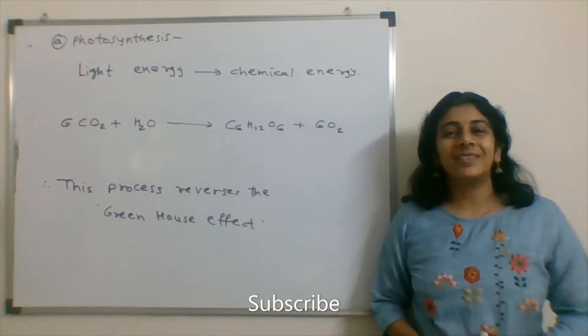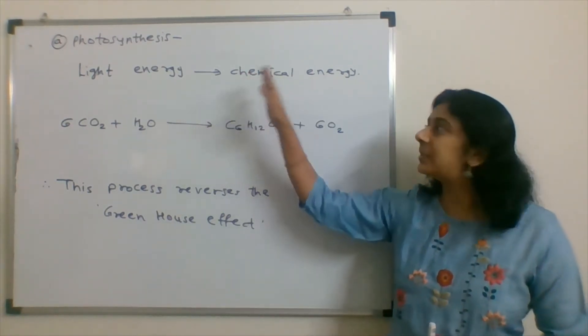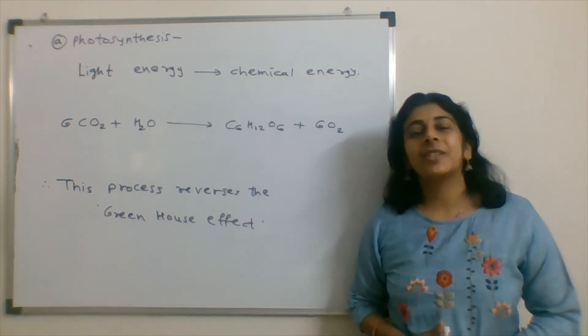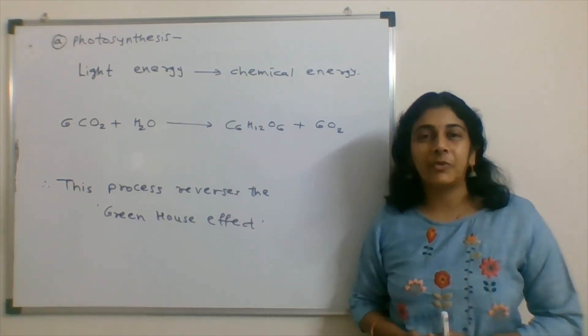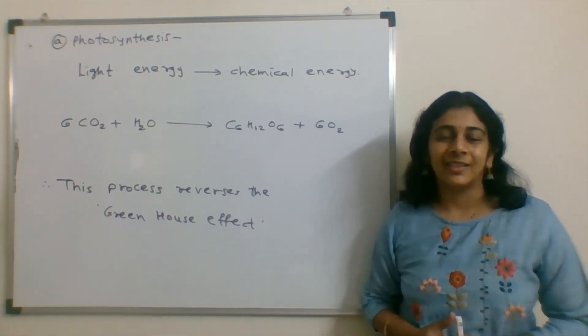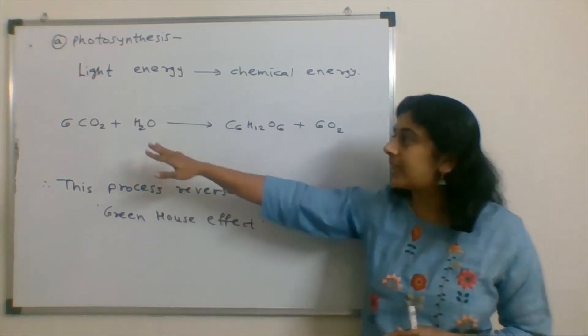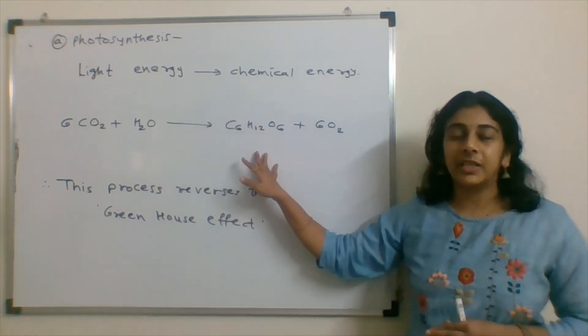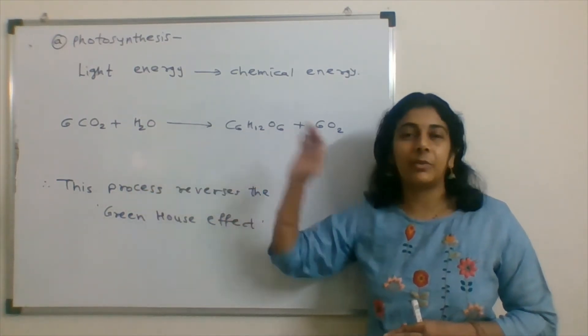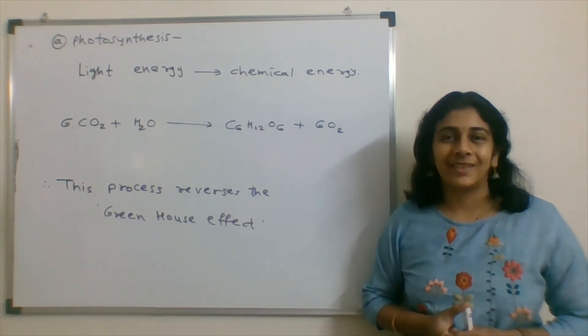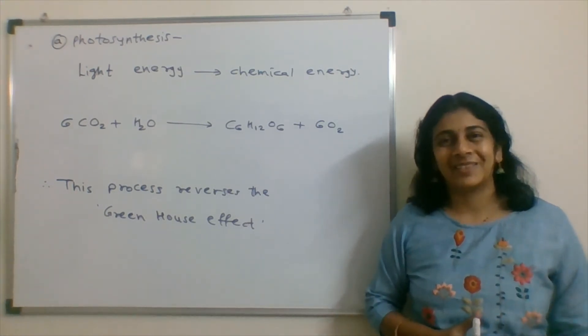Discussing first option - Photosynthesis. Light energy gets converted into chemical energy using chlorophyll pigment present in chloroplast. The simplified reaction is carbon dioxide plus water getting converted into sugar and oxygen. Carbon dioxide and water vapor are greenhouse gases. So, as per the question, this process is reverse of the greenhouse effect.